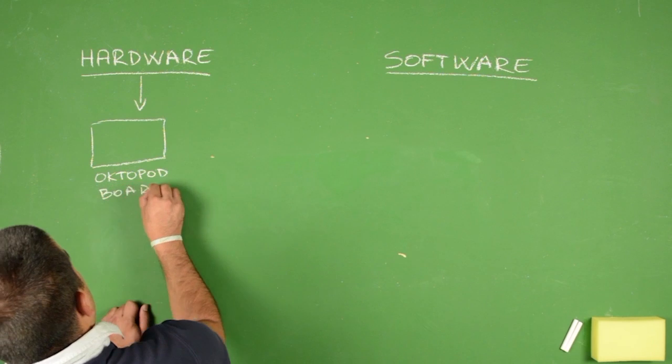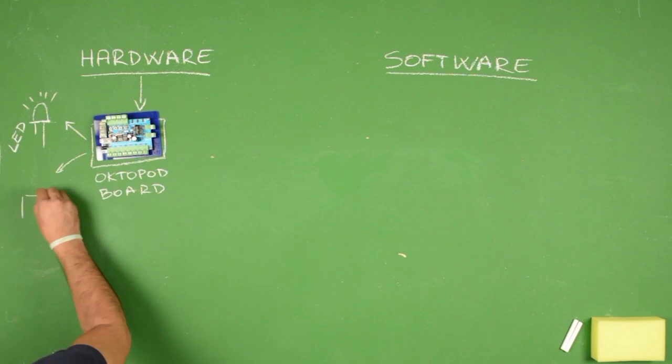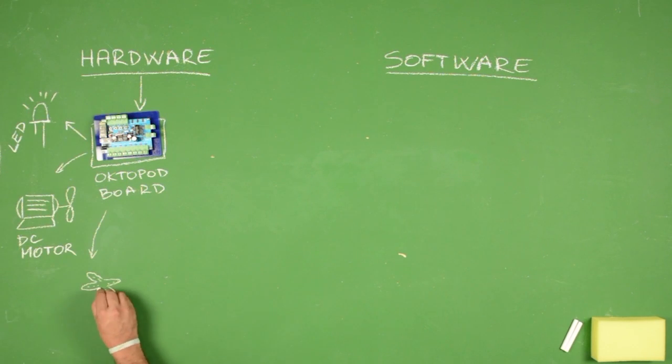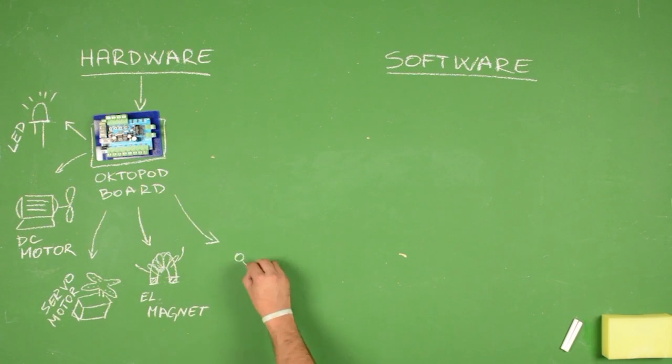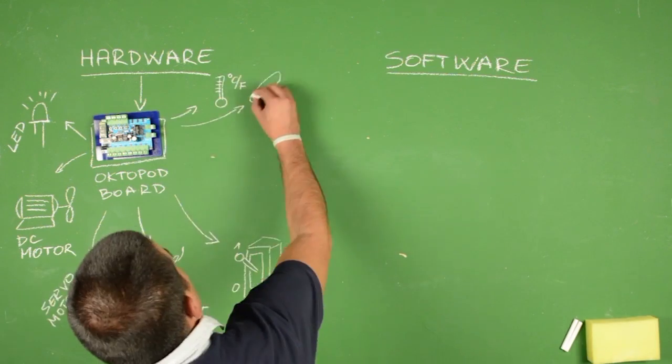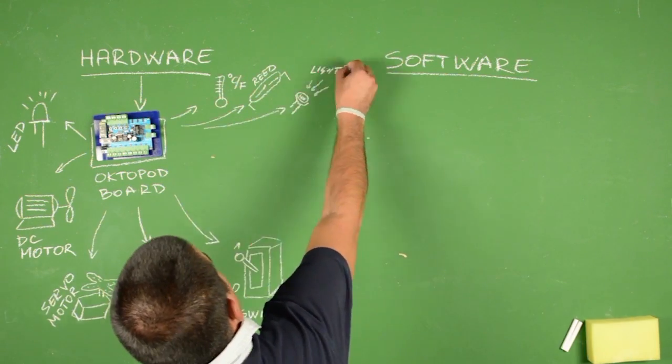The hardware unit, Octopod Board, presents a small programmable logic controller which features plug and play inputs and outputs for connecting low voltage electronic devices like LED lights, DC motors, servo motors, electromagnets, switches, photo, thermo and magnetic sensors and so on.